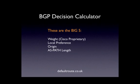This brings us to the last of the big five: metric, usually called MED — Multi Exit Discriminator. You'd usually see MED used where you've got an ISP and you're connected to them with two or more links, and you want to preference inbound traffic. So it's an inbound decision maker — you're telling your neighbouring ISP which of those multiple links you want them to send traffic on.